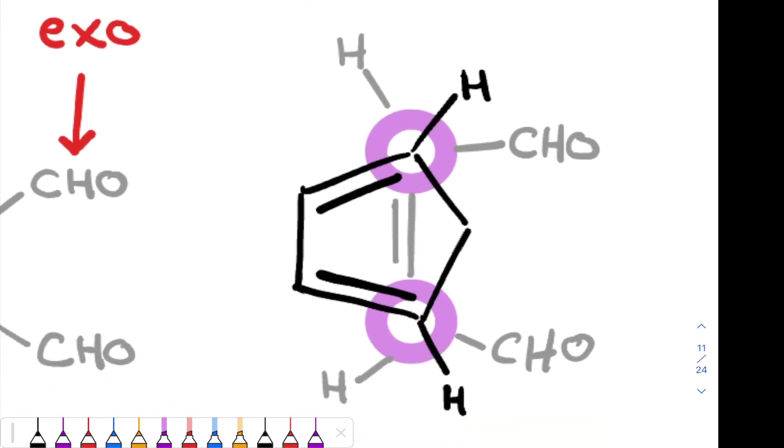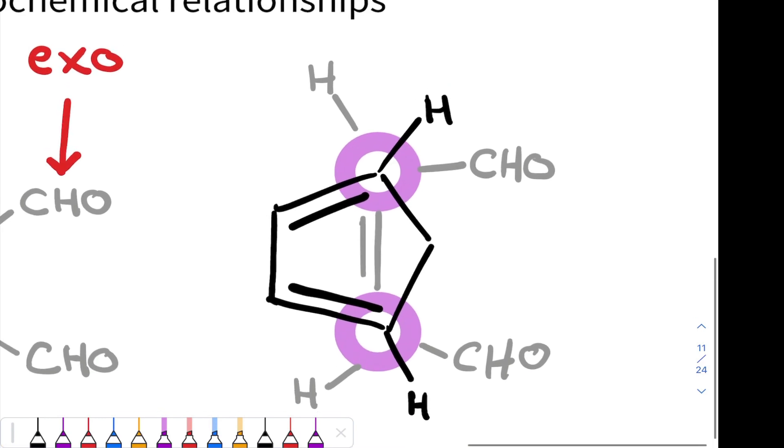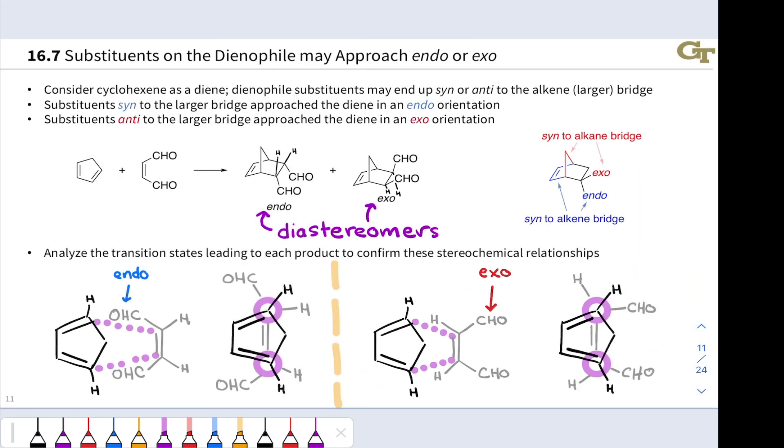So now the CHO groups are in an exo-orientation, and as you might imagine, now we see that the CHO groups and these carbons, which become part of the double bond in the cyclohexene in the product, these are now anti to each other, and we see that in the exo product.